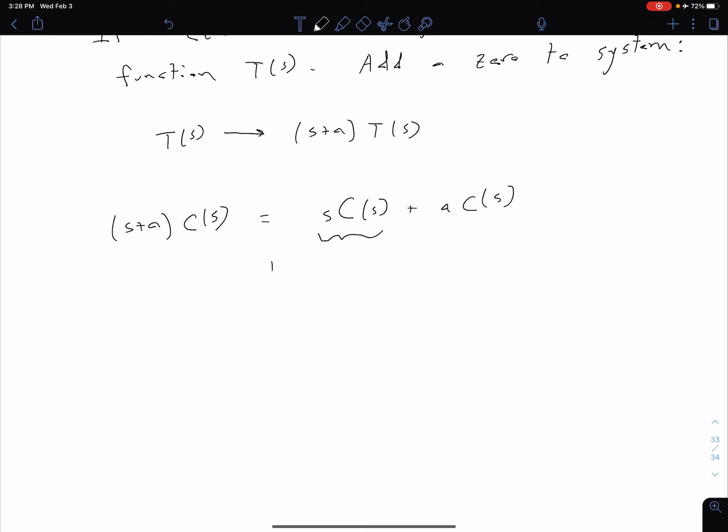What this first term is, is this is actually related to the derivative of our original response. So derivative of original response. And so the reason that I can say that is, of course, because we had our Laplace transform property of time differentiation. So remember, deriving in time corresponds to multiplying by s in frequency. So this first term corresponds to the derivative of the original response, whereas the second term is just a scaled version of the original response. So we've just multiplied that by A. So scaled version of original response.